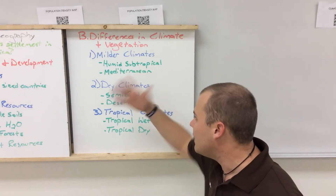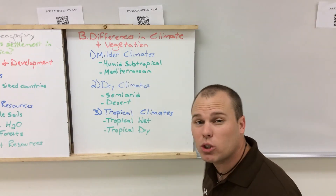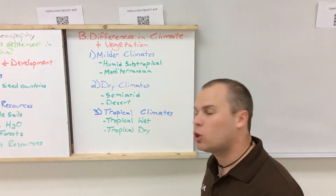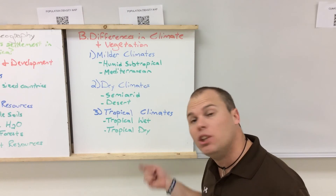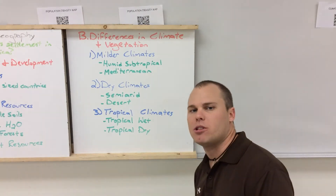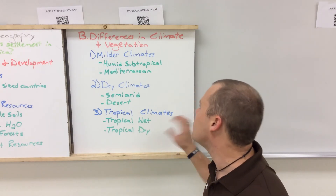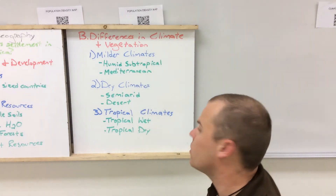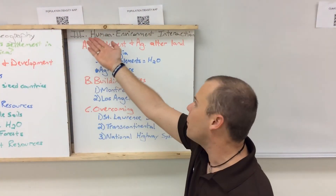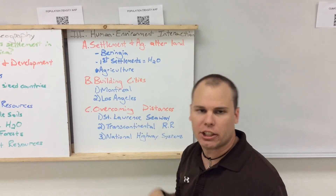Tropical climates are also exceptions found in this region. In Hawaii there is tropical wet climate. In Florida there are tropical wet and tropical dry climate zones that lead to swampy areas. These tropical regions are exceptions to the rule for this part of North America.